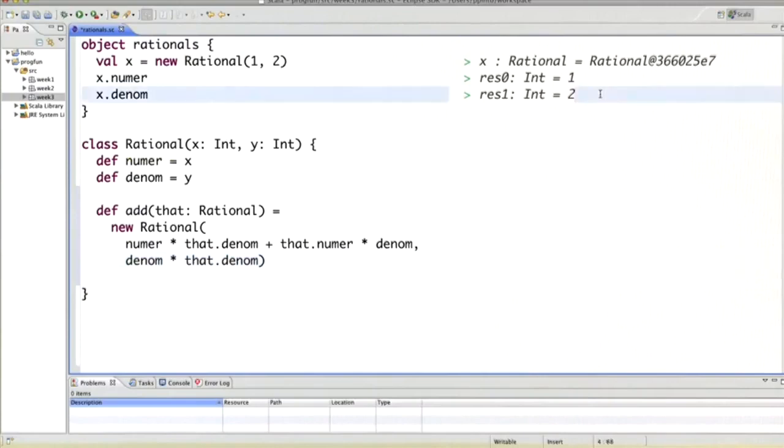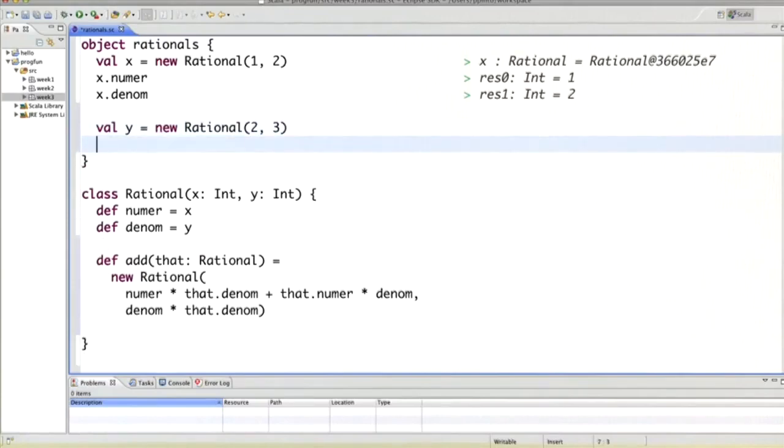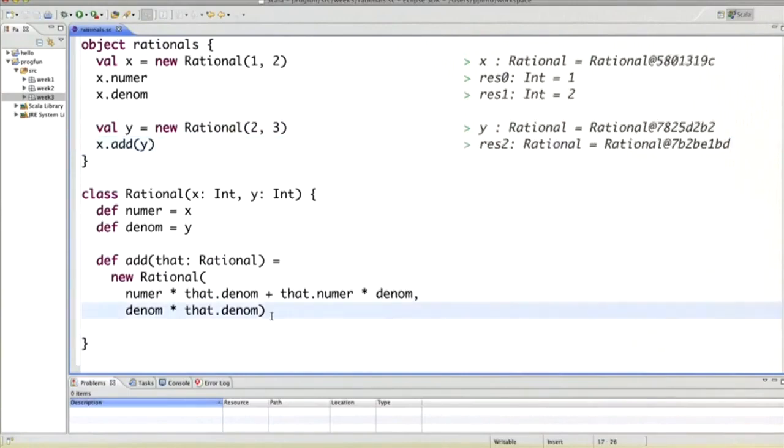So let's see how that would work in the worksheet. Let's write another rational, maybe two thirds. And then let's write x.add(y). We still don't see very much because our rational class doesn't have a good way to print itself. So let's change that.